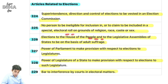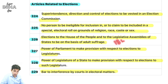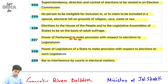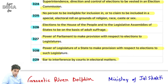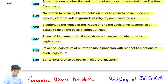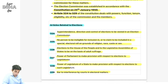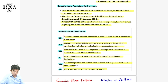Article 326: election of House of People or Legislative Assembly on the basis of adult suffrage - har vayask 18 plus ko vote daalne ka adhikaar hai. Article 327: power of Parliament to make provision with respect to elections to legislature - is se aata hai RPA 1950 aur RPA 1951. Article 328: state legislature ka provision bhi hai. Article 329: bar to interference with courts in electoral matters. Yeh Part 15 mein article 324 se 329 - these are related to election conduct in India.